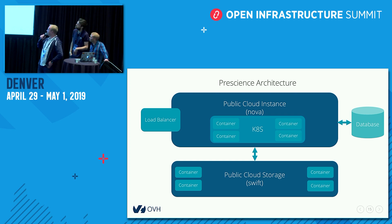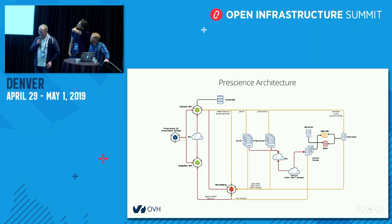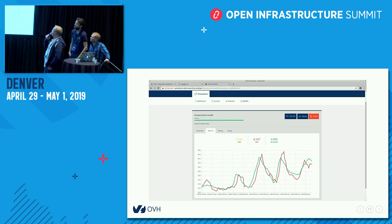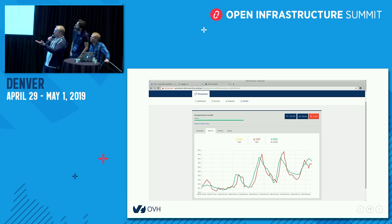Here is the PreScience architecture in detail, but time is running out — if you have questions we can discuss after the presentation. Here is an example of PreScience in production: we have a temperature curve, a forecast shown in red, and the score of this model. This model has been automatically built by PreScience.